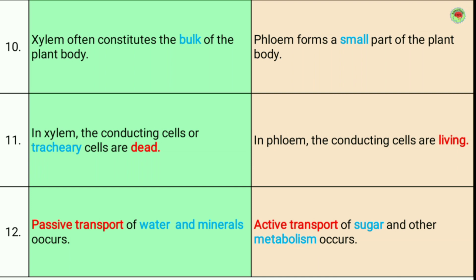Eleventh, in xylem the conducting cells or tracheal cells are dead, while in phloem the conducting cells are living. Twelfth, passive transport of water and minerals occurs in xylem, while in phloem active transport of sugar and metabolites occurs.